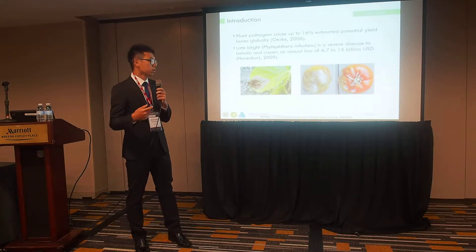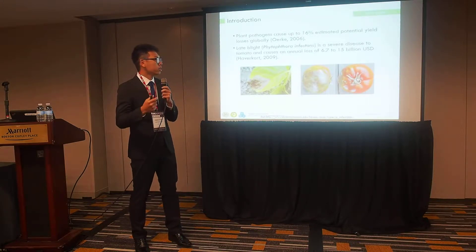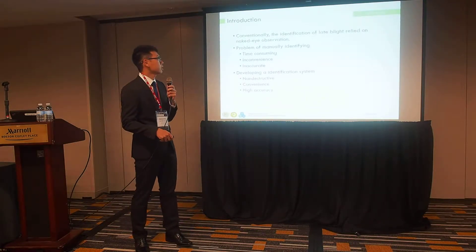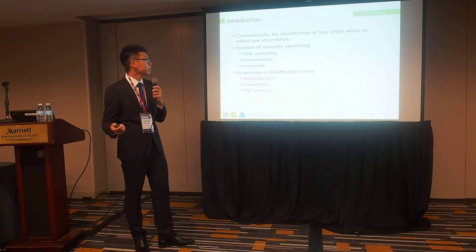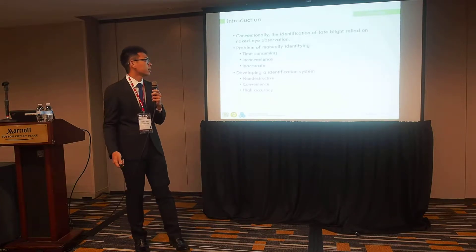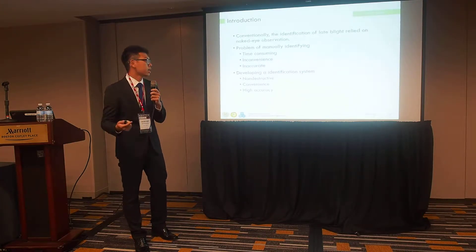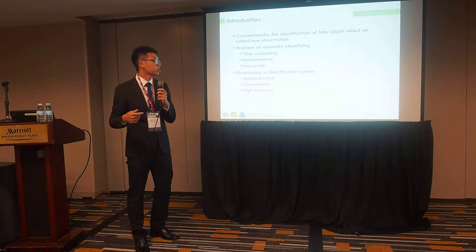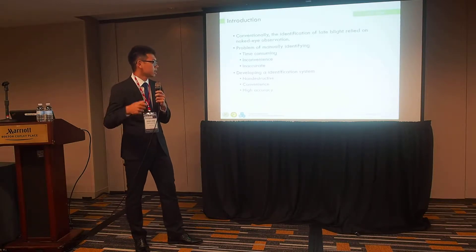To reduce the loss, we need to find when the field is infected by late blight as soon as possible. Conventionally, identification of late blight relies on farmers or disease experts' naked eye observation. But there are some problems with manual identifying: it is time consuming and inconvenient, and sometimes human error will make it inaccurate. So we want to develop an identification system that must be non-destructive, convenient, and high accuracy.